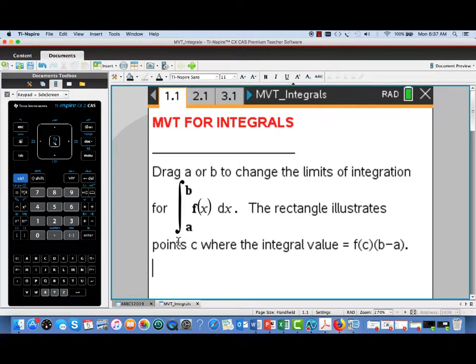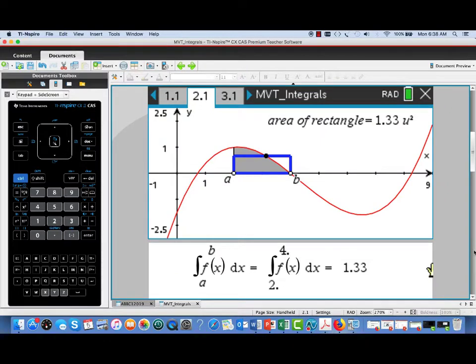There's going to be a rectangle that will illustrate the value for the average value of the function, and we'll be looking for a point c between a and b such that the function value there times the length of the interval b minus a will give us that definite integral value. In other words, the function takes on its average value at at least one point.